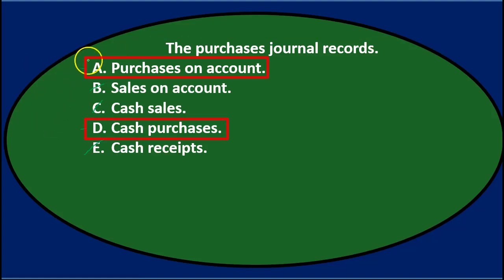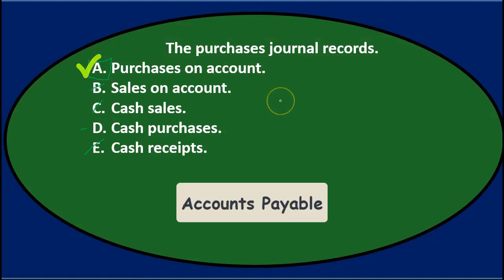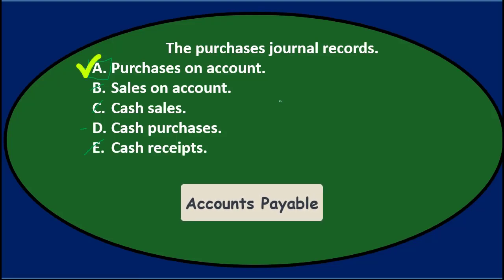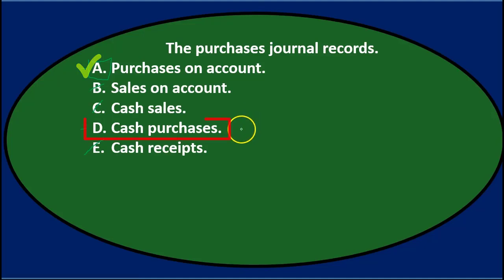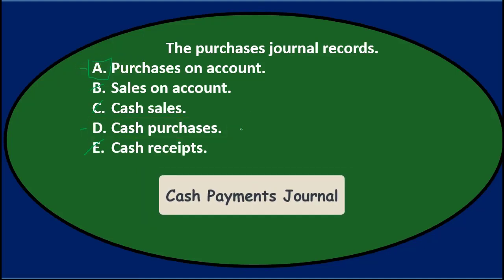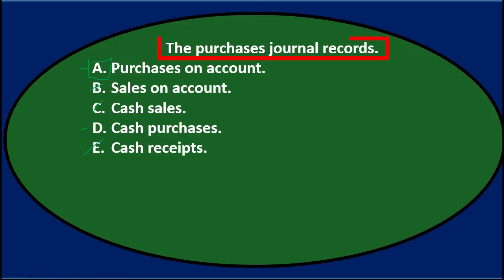Of the two, the answer is actually A, purchases on account. Although it's called the purchases journal, what's really driving this process is that we're purchasing things on account — it may be better called the accounts payable journal. If we purchase things for cash, that would go in the cash payments journal rather than the purchases journal.